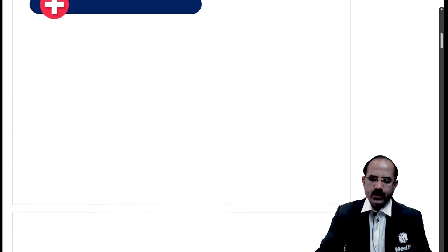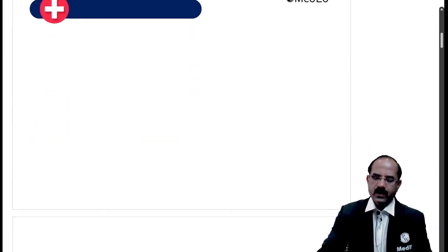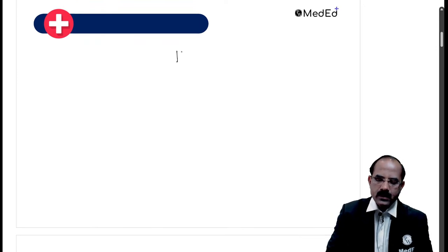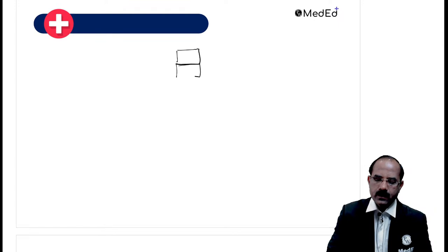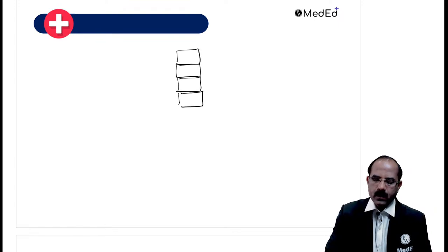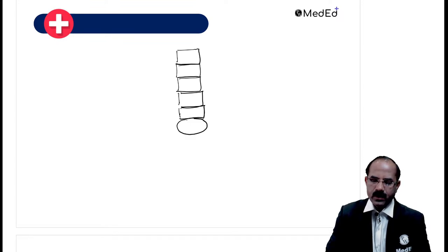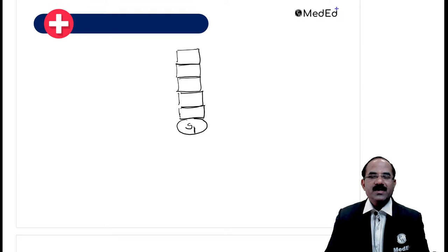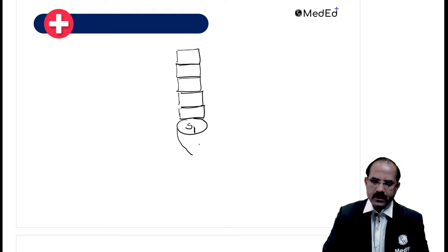I will draw a slide for you students. These are the lumbar vertebrae, and that's the body of S1. Can you tell me what the body of S1 is known as? The first sacral vertebra - that's the sacral promontory. Correct - sacral promontory. And what are these students?